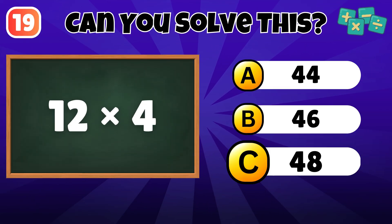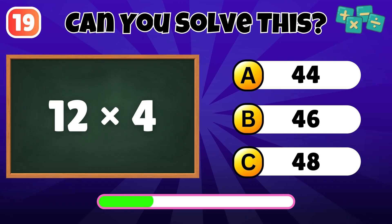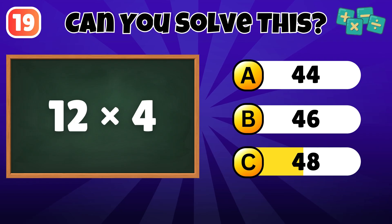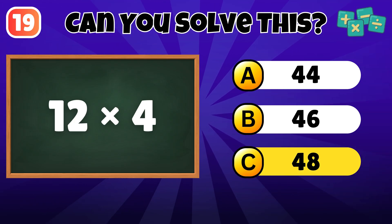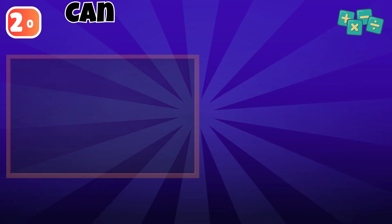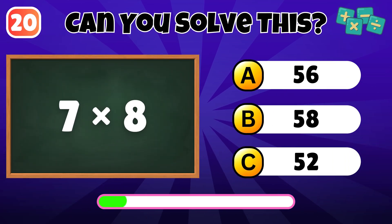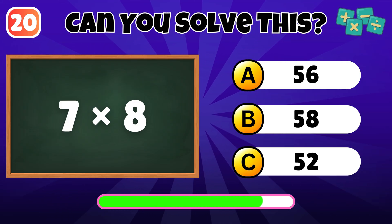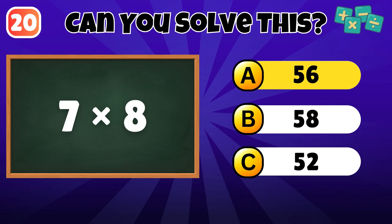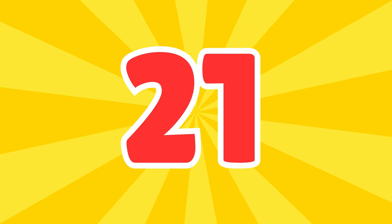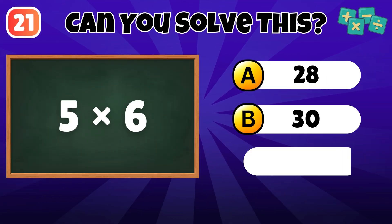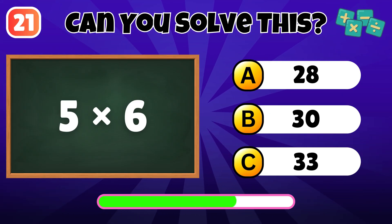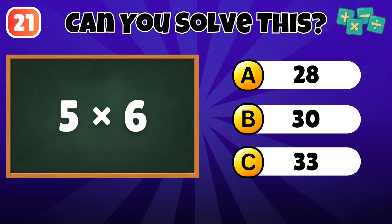What is 12 times 4? The answer is 48. What is 7 times 8? The answer is 56. What is 5 times 6? The answer is 30.